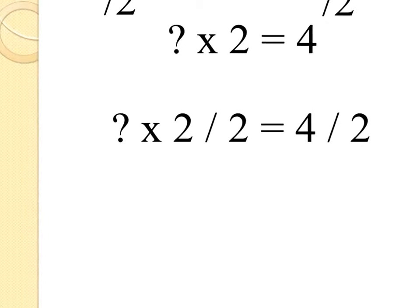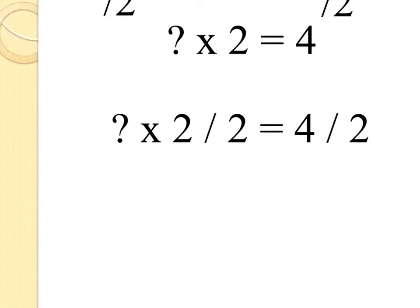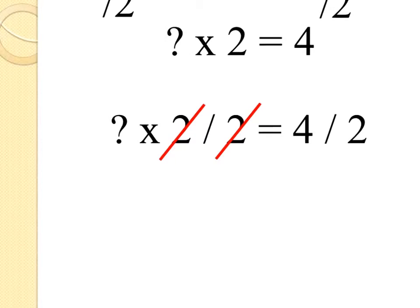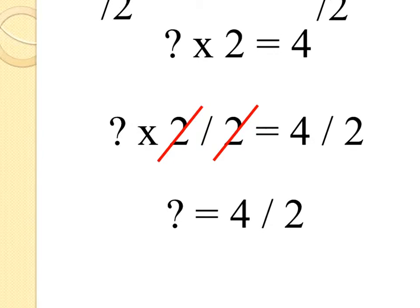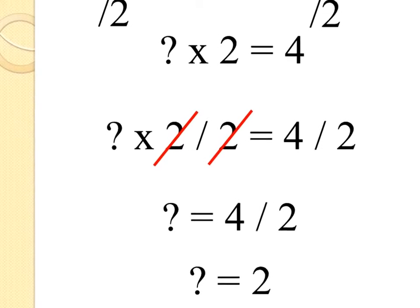And I get question mark times 2 divided by 2 equals 4 divided by 2. The 2's cancel each other out. They turn into 1, since it's 2 divided by 2. And I'm left with question mark equals 4 divided by 2, which I can solve for question mark equals 2.